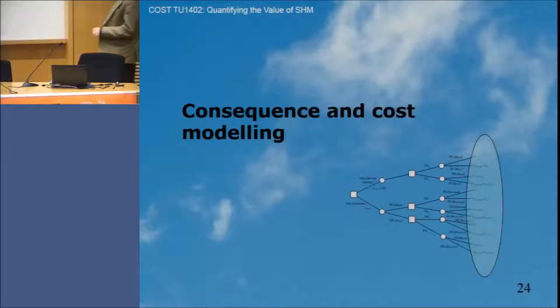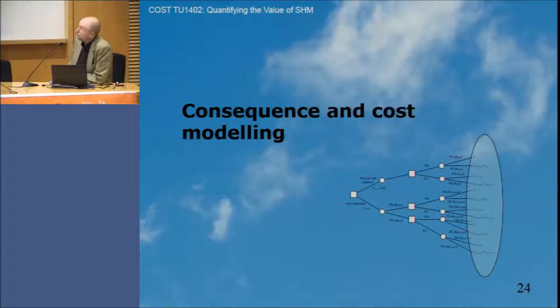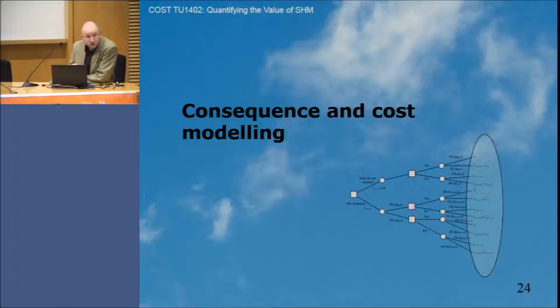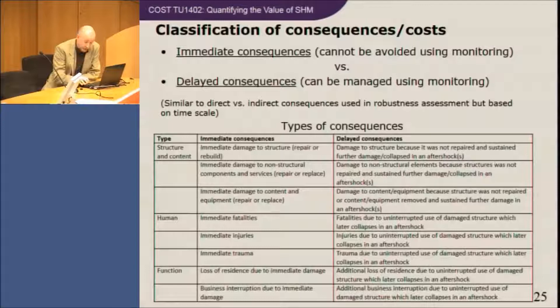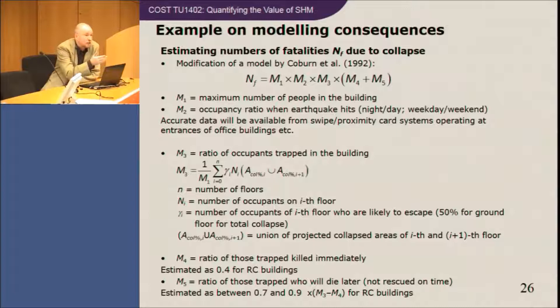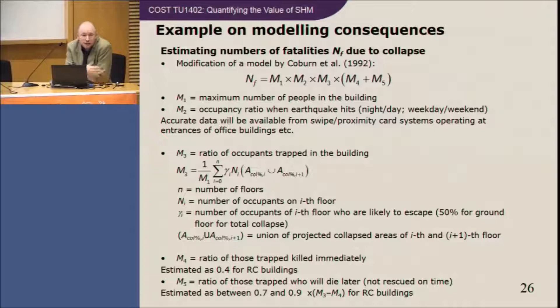Regarding consequences: yes, we should model consequences of failure. There are considerable uncertainties. We looked at consequence types and came up with a few models from the robustness cost action, including a model for the number of casualties in a building. There are other types of costs to include as well, and these constructions do appear to produce something useful.